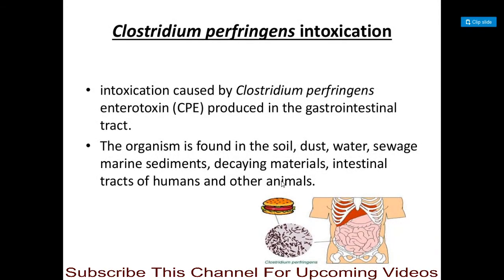The next bacterial foodborne intoxication is Clostridium perfringens. This intoxication is caused by Clostridium perfringens enterotoxin produced in the gastrointestinal tract. This organism is found in soil, dust, water, sewage, marine sediments, decaying materials, and the intestinal tract of humans as well as other animals — this is the habitat of Clostridium perfringens.